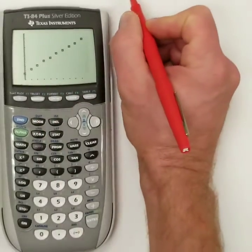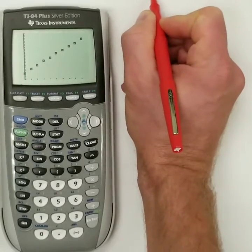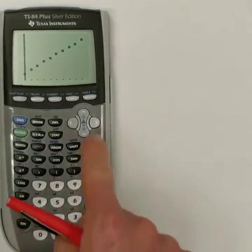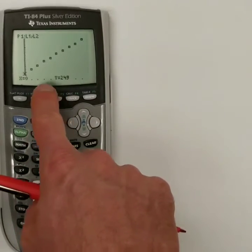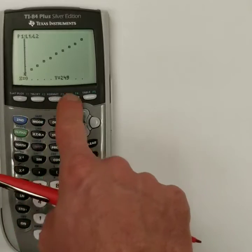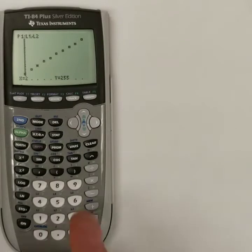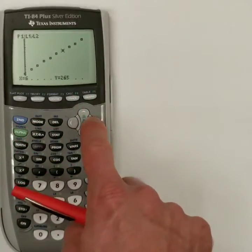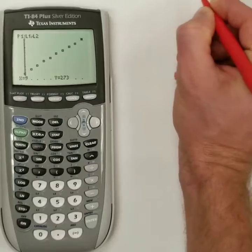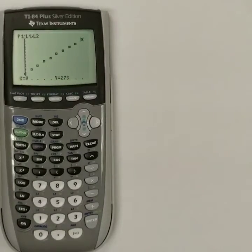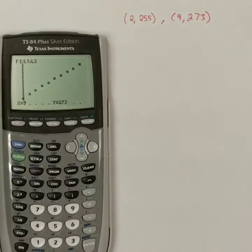So, the third point is the point 2, 255. Remember, oh, and to figure that out, I can go to the trace button. Remember, the trace button will give me actual values. And so, right now, it's showing me the first point. If I hit the right arrow, it will jump to the second and then jump to the third. So, there it is 2, 255. And then that last point up there, keep hitting the right arrow, gives me the point 9, 273. I gotta show you those there. I wrote them down. 2, 255 and 9, 273.